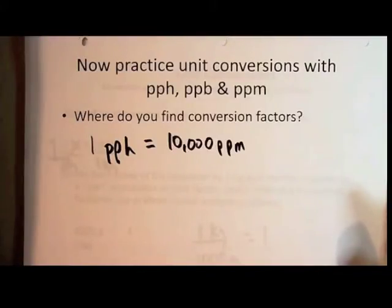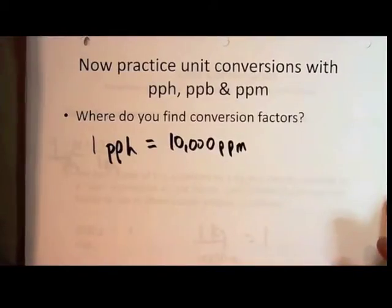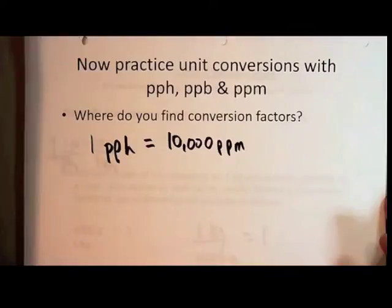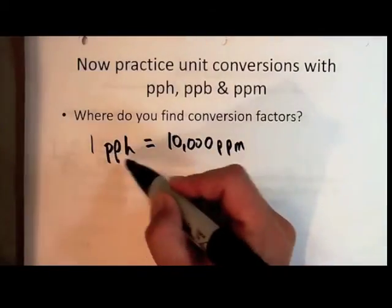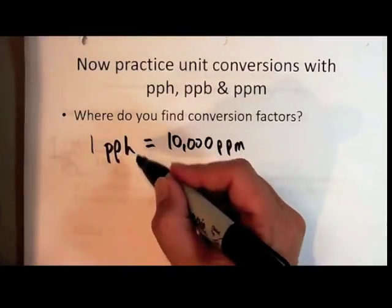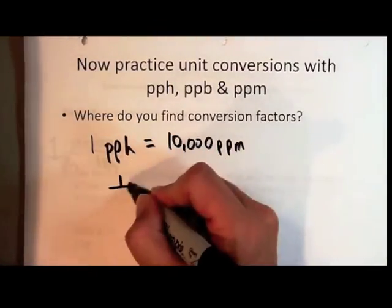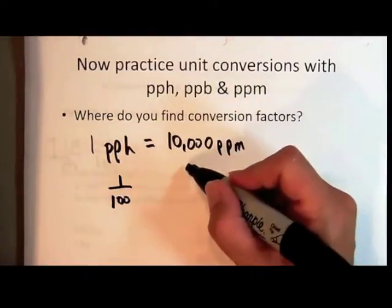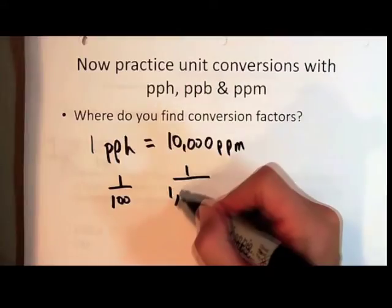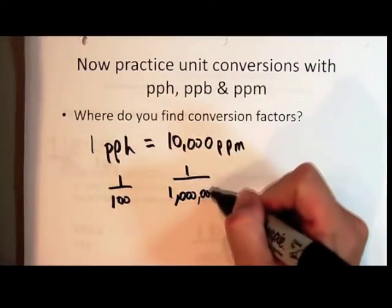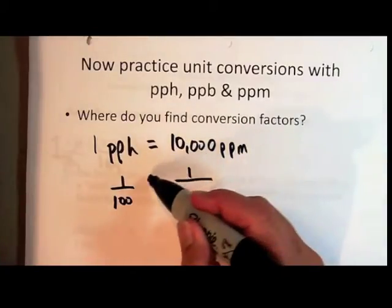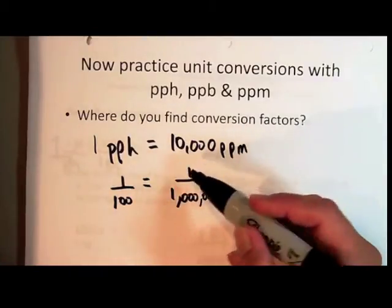We don't have to memorize this equality like we would in the case of the metric system. Instead, you can understand the concept. One part per 100 is the same as one per 100, and one part per million is the same as one over a million.